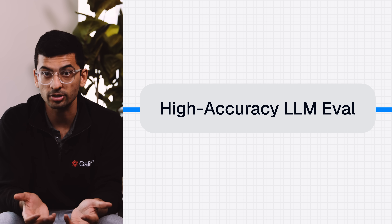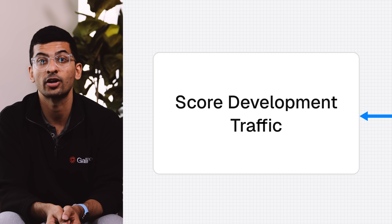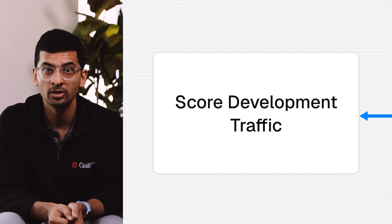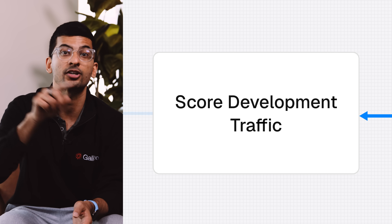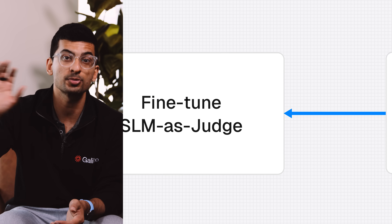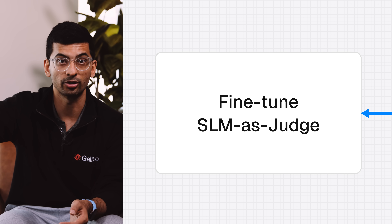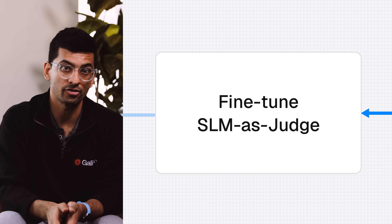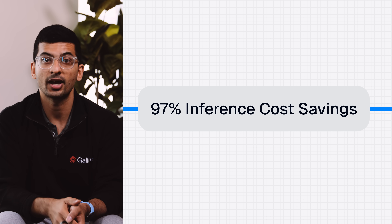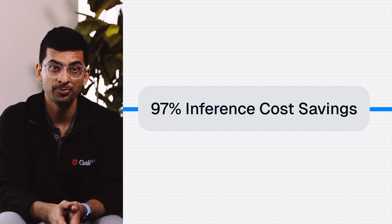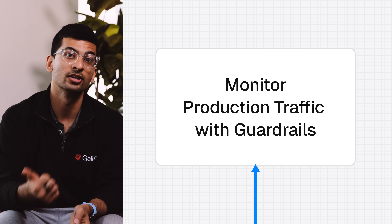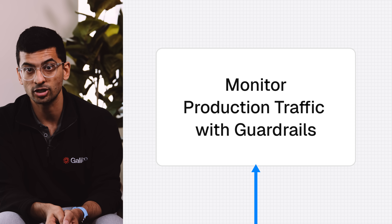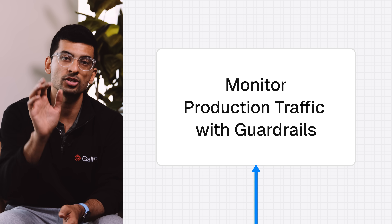However, high-accuracy LLMs as a judge are still extremely slow and very expensive, so you can't use them for 100% observability — most folks end up doing 10% sampling, which is just not good enough. To bridge this gap from 10% to 100% observability, enter small language models. You take the same prompt created before and fine-tune a small language model with data from your production traffic. With this fine-tuned SLM as a judge, you get a high-accuracy, low-latency, very low-cost alternative for 100% observability of your traffic.